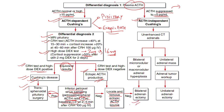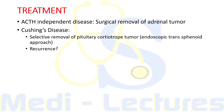For Cushing's disease, treatment is transsphenoidal pituitary surgery. For ectopic ACTH production, we locate and remove the ectopic ACTH source, or proceed to bilateral adrenalectomy if no source is found. For ACTH independent Cushing, we perform non-contrast CT of the adrenals: if a unilateral adrenal mass is found, unilateral adrenalectomy is performed; if bilateral micro- or macronodular adrenal hyperplasia is present, bilateral adrenalectomy is performed.